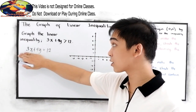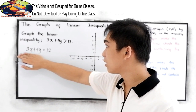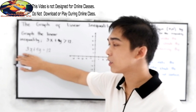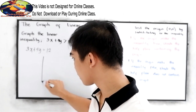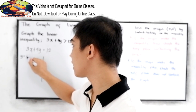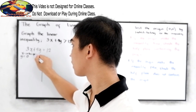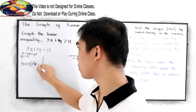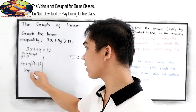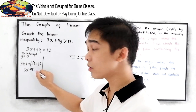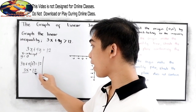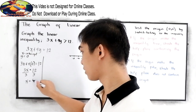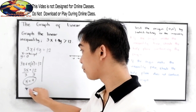Let us first graph 3x plus 4y is equal to 12. The easiest way here is to get the y-intercept and the x-intercept. To get the x-intercept, let y be 0. So we have 3x plus 4 times 0 is equal to 12. Now we have 3x is equal to 12. Divide by 3, so x is equal to 12 divided by 3, which is 4. So our x-intercept is (4, 0).